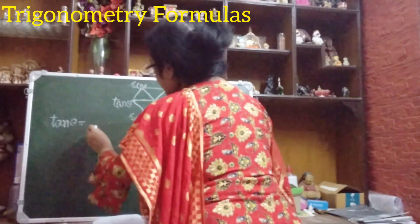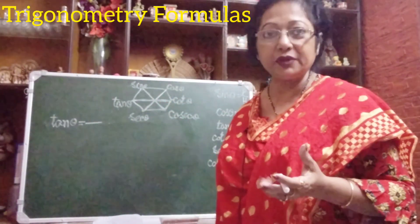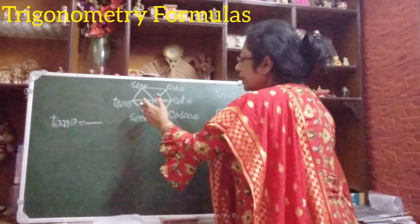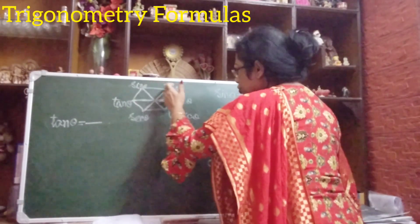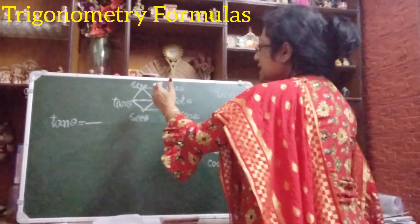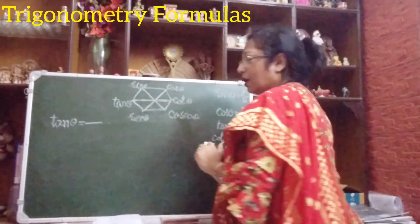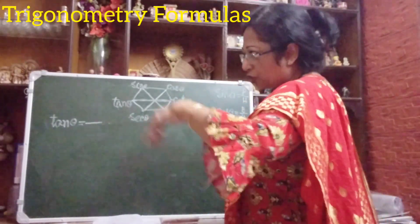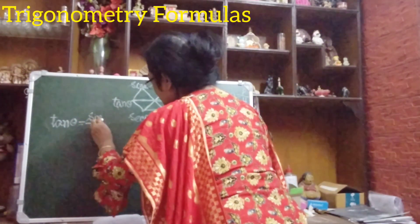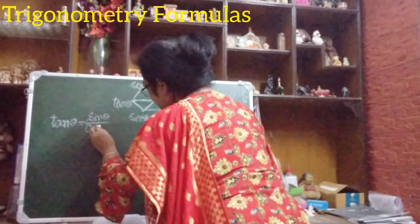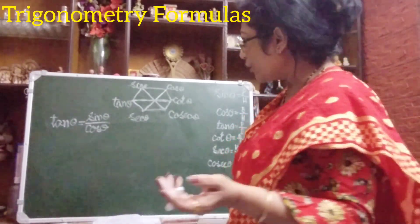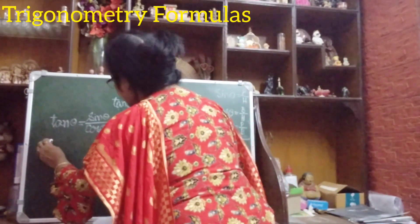Now let us start. First I will write what tan theta equals to. The trick is: to find the identity for any function, look at the next two functions clockwise on the hexagon and divide them. For tan theta, the next two clockwise are sin theta and cos theta. So: tan theta equals sin theta divided by cos theta.